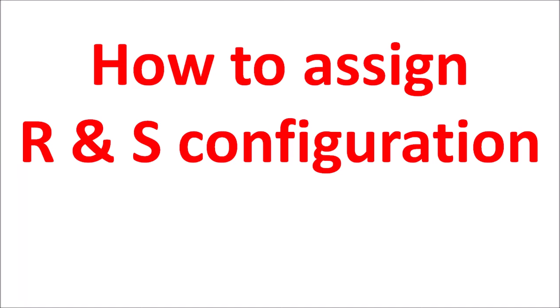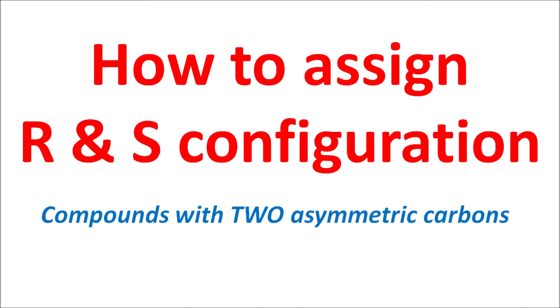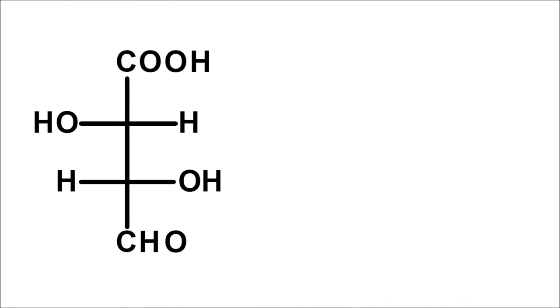Hi everyone. Today in this video we are going to discuss how to assign R and S configuration for compounds with two asymmetric carbons. Let us take a structure like this.